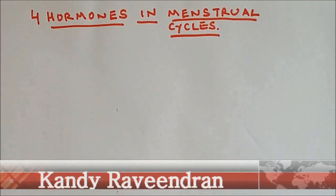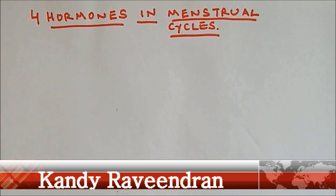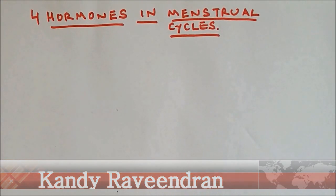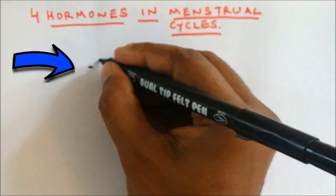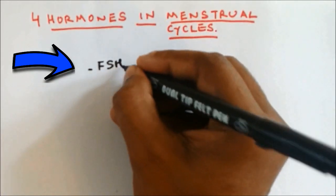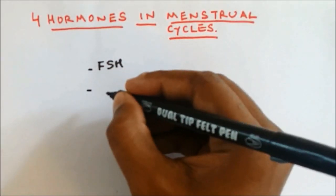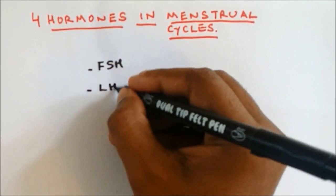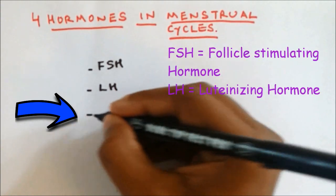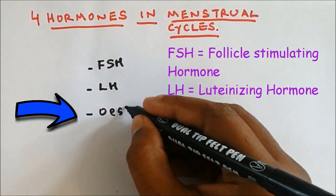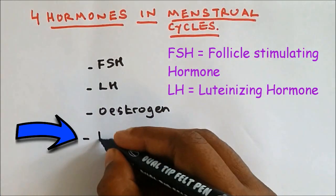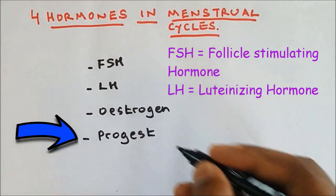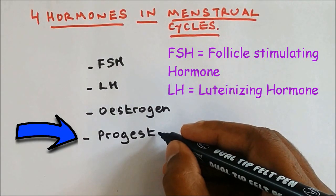Hi everyone, welcome to Science Tutorial for You. There are four hormones involved in the menstrual cycle, and these hormones are FSH, LH, Oestrogen, and Progesterone.